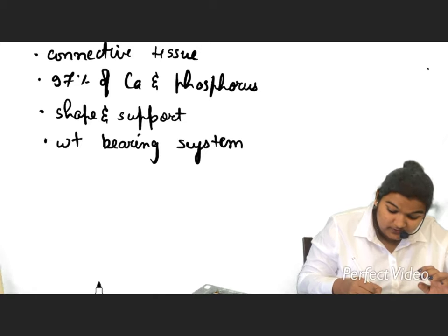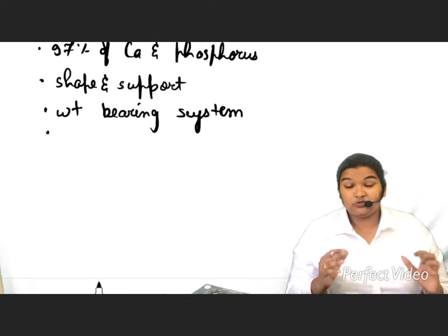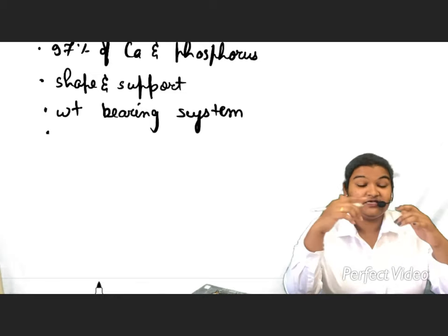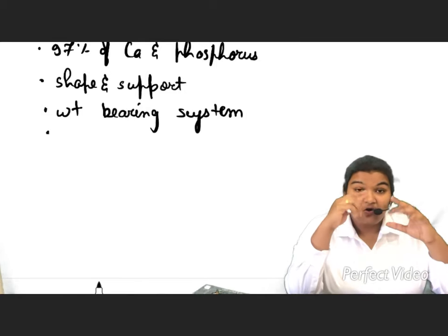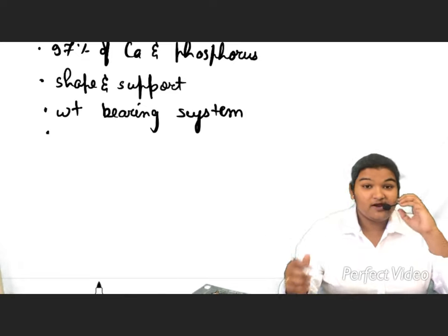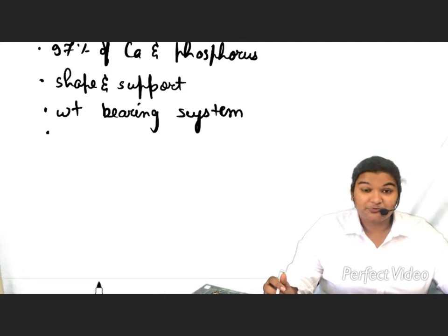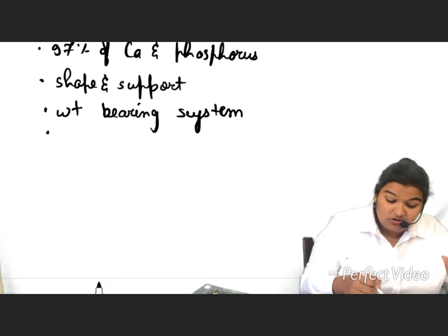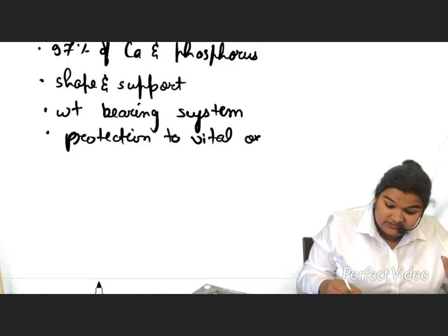When you think of a group of bones — such as the pelvis, ribcage, and skull — all of these provide protection to the major organs. For example, the skull provides protection to the brain, and the ribcage provides protection to the lungs and heart.